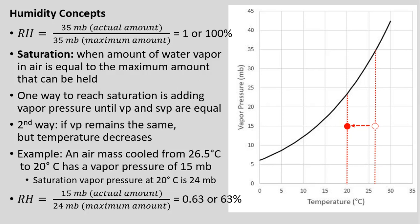One way to reach saturation is to simply add vapor pressure until the vapor pressure and saturation vapor pressure become equal. This most often happens over oceans, where water is evaporated off by incoming solar radiation. Since the vapor pressure of the air is lower than that of the water surface, we have evaporation off that water, and vapor pressure goes up into the air until it possibly reaches the saturation vapor pressure for that temperature.